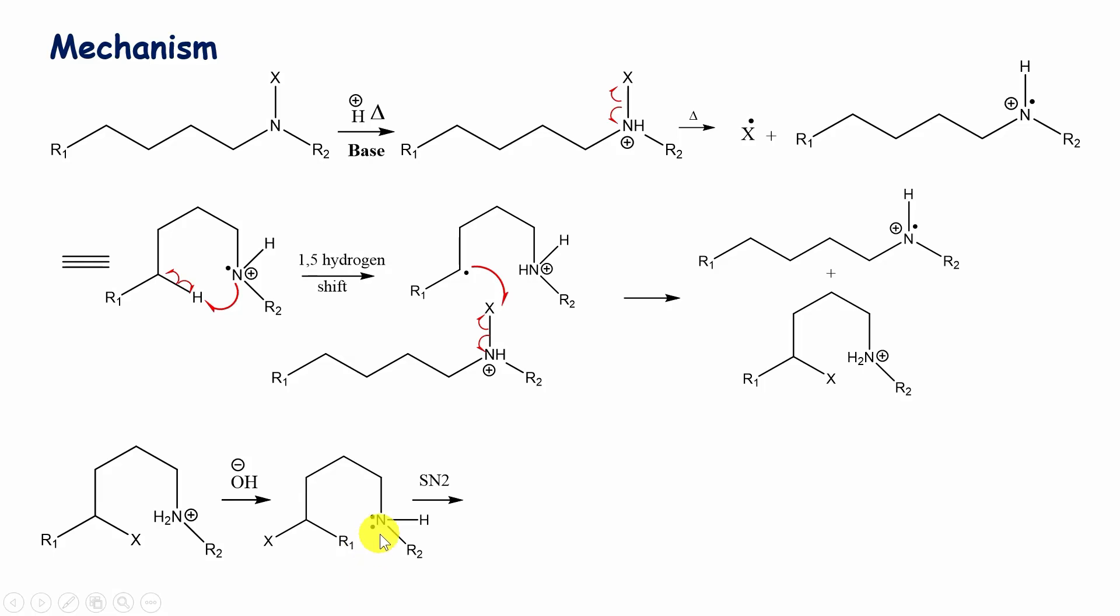Then, an SN2 type reaction takes place. This lone pair on nitrogen attacks this carbon atom. Simultaneously, halogen is eliminated from this carbon atom, forming this nitrogen cation—this molecule with nitrogen bearing the positive charge.